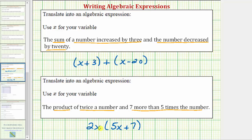We could put the two x in parentheses, but by having two x next to the parentheses, the multiplication is implied. So the expression two x times the quantity five x plus seven means the product of twice a number and seven more than five times a number. I hope you found this helpful.